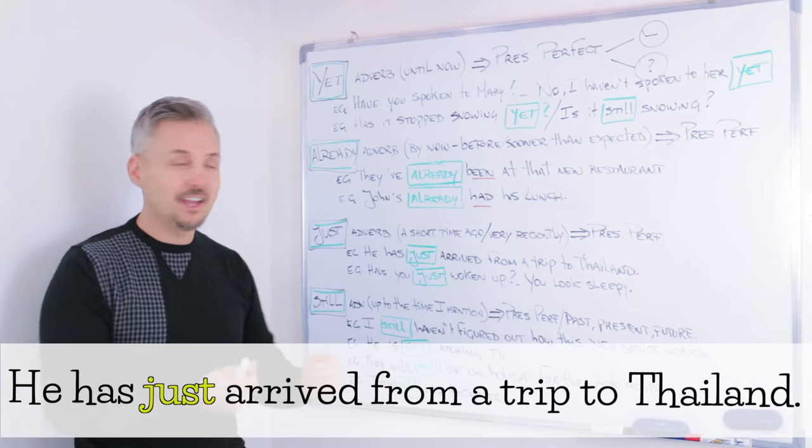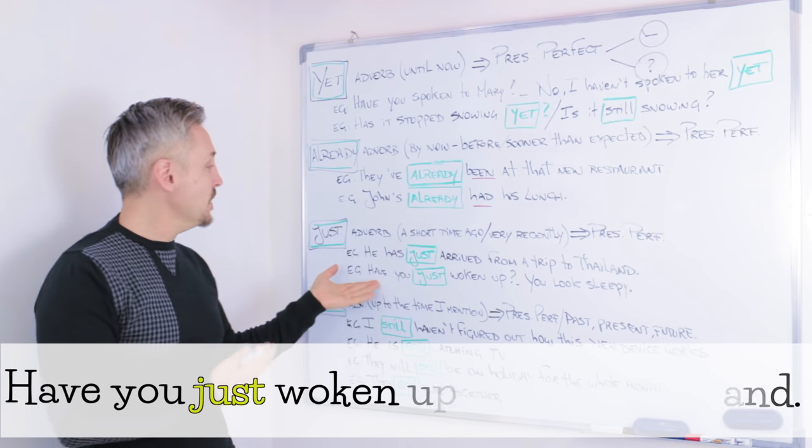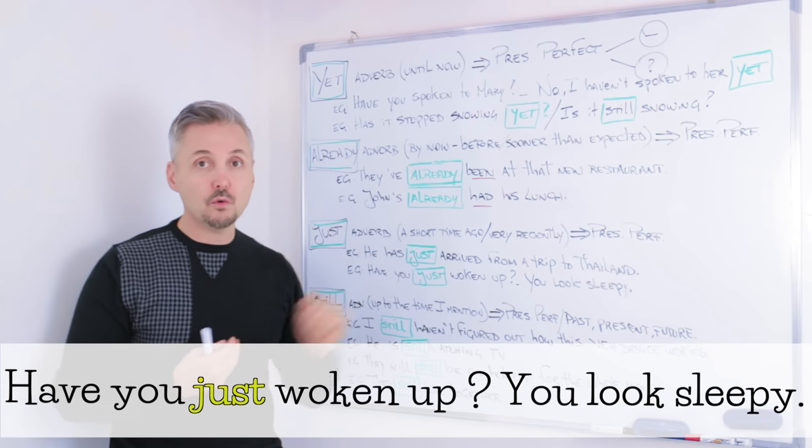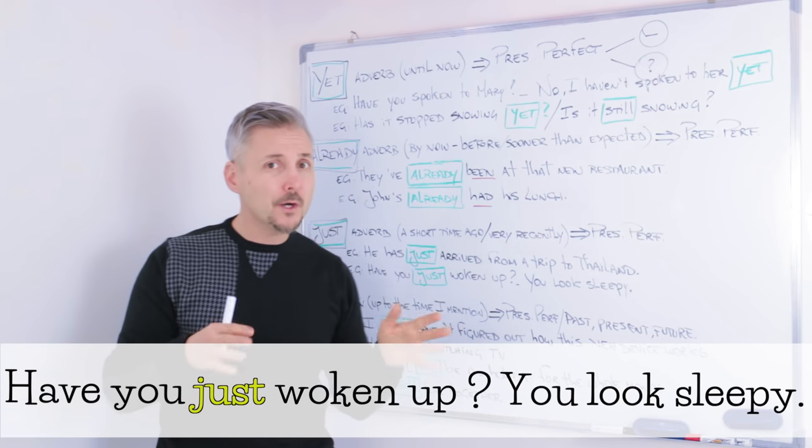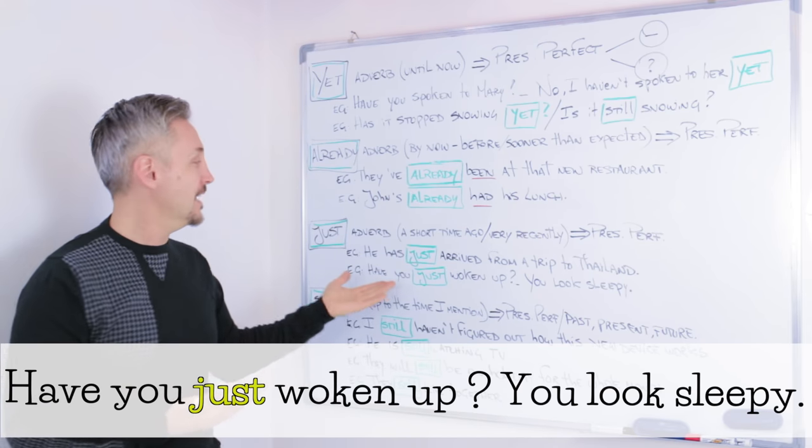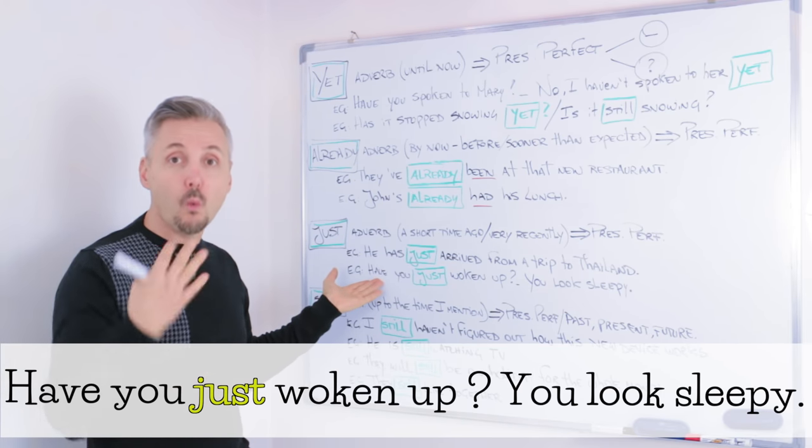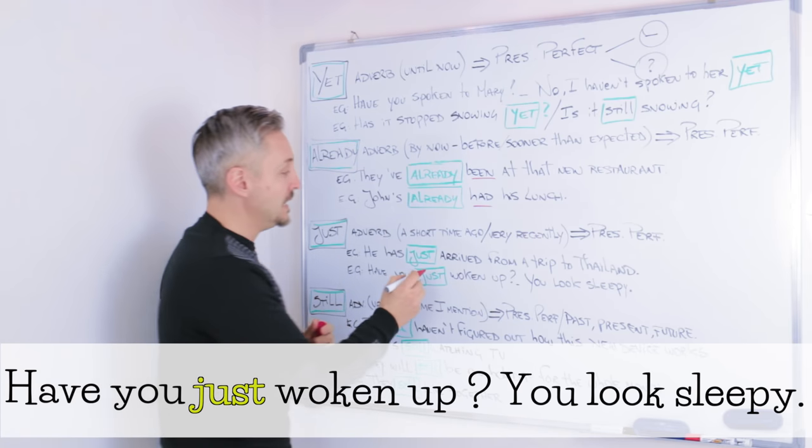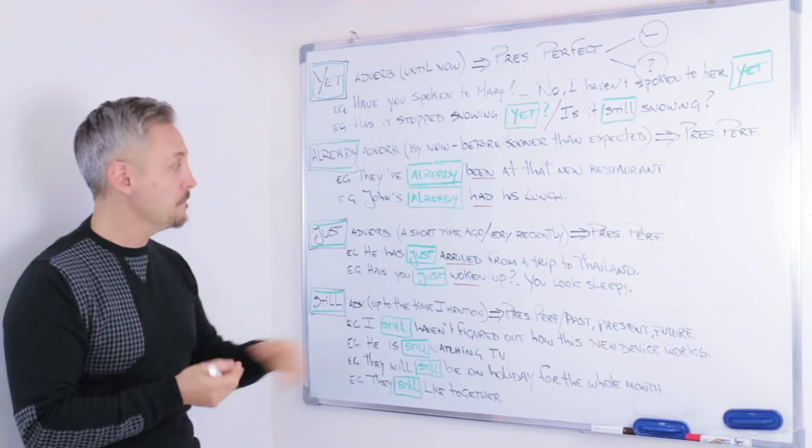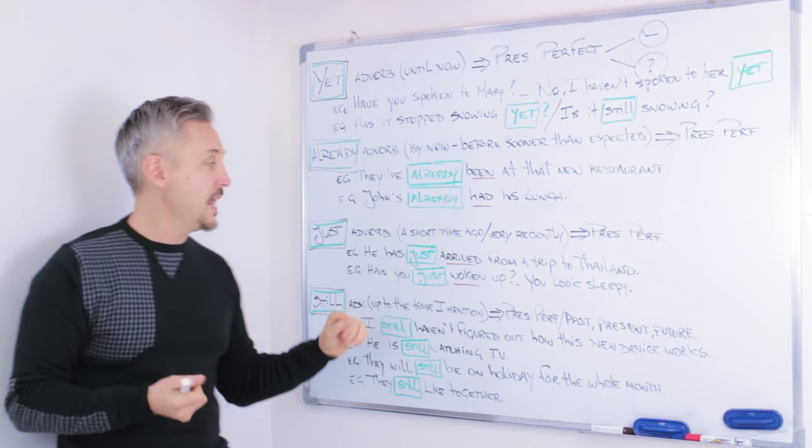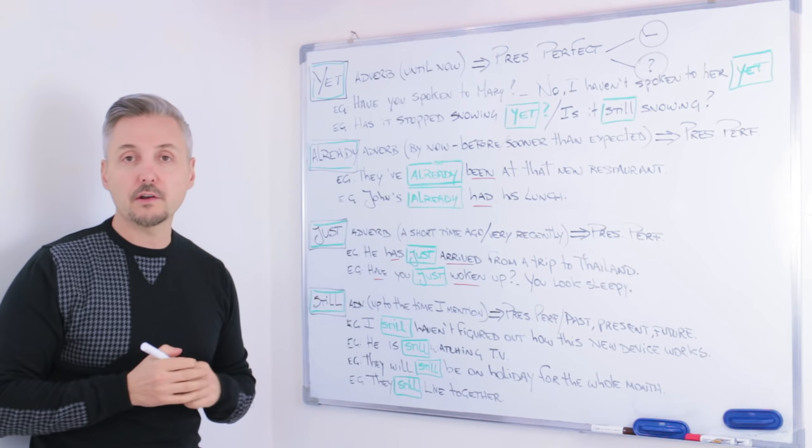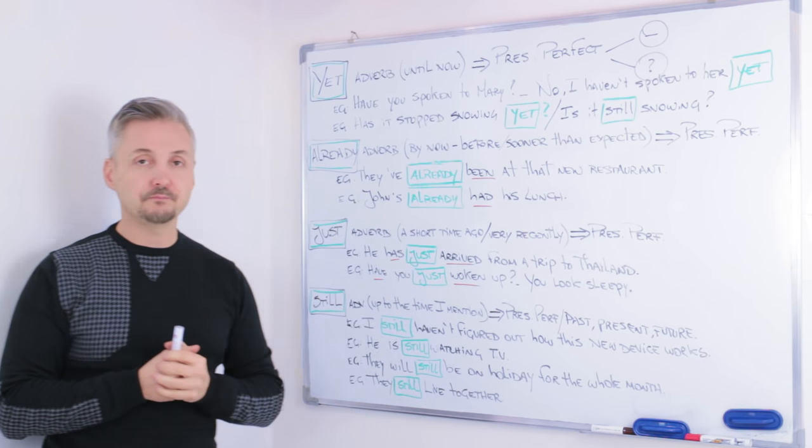So, the other example. Have you just woken up? Have you just woken up? You look sleepy. Of course. He has just woken up. Now, look at the placement of just. Is always before the past participle or the verb, the main verb. And, obviously, is after the auxiliary verb to have, in this case.